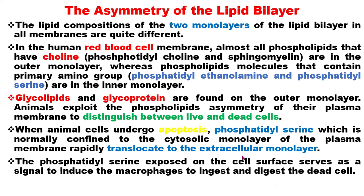In apoptosis, phosphatidylserine that was supposed to be inside translocates to the outside. This phosphatidylserine exposed on the cell surface now serves as a signal that this cell is supposed to die, so apoptosis can take place. This phosphatidylserine signal attracts macrophages, and these macrophages ingest and digest the dead cell.